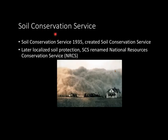Now let's look at the Soil Conservation Service. The Dust Bowl happened in the 1930s and completely ruined a lot of good cropland because of the drought. As a result of the Dust Bowl, the Soil Conservation Service was created in 1935. In more recent years, soil protection has become more localized, and the SCS was renamed the National Resources Conservation Service, or NRCS.